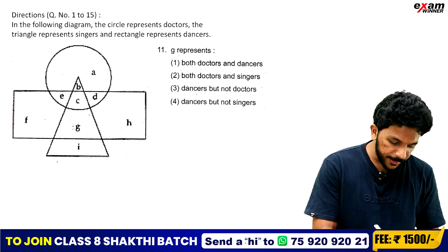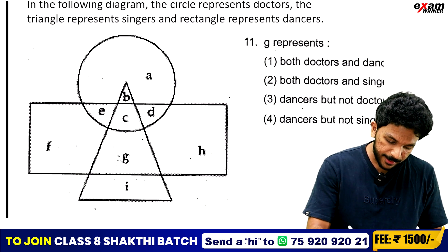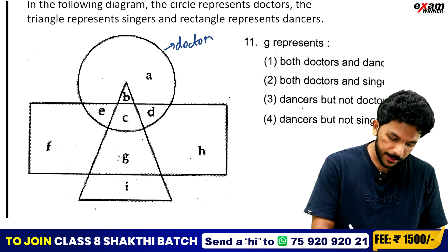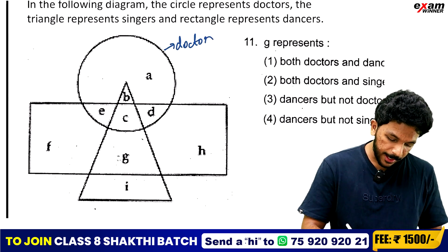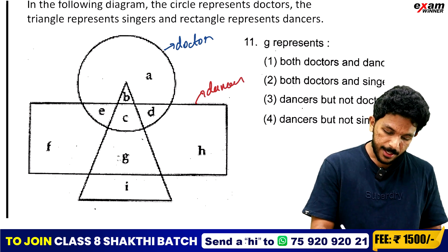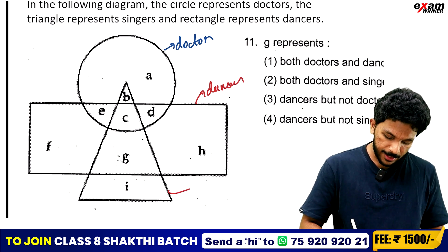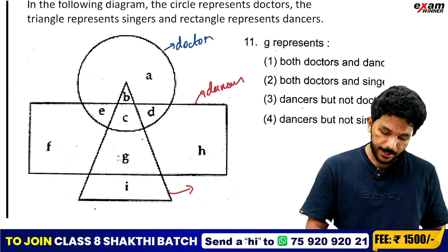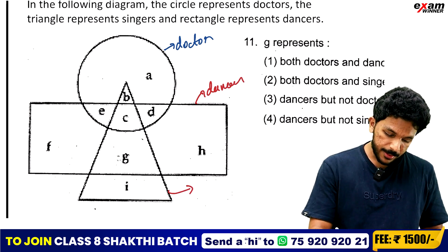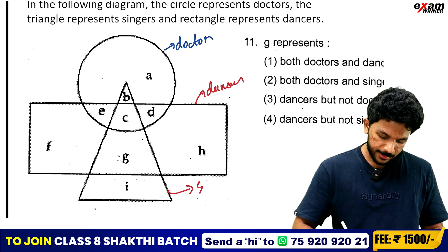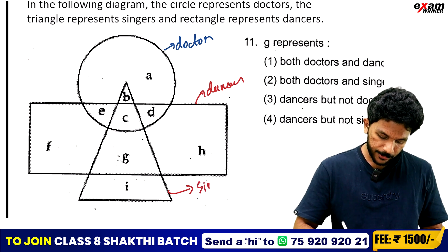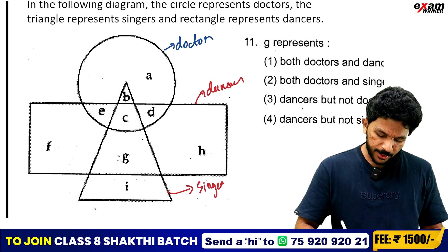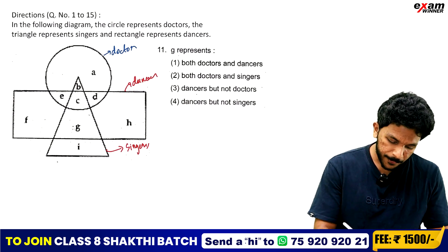Let's talk about it. This is doctors. Rectangle is dancers. That is the triangle — triangle is singers. What is triangle? Singers. If you have something, my answer is very simple.